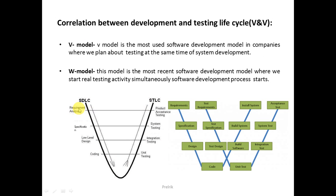In the V model, when working on one phase, they simultaneously plan for the corresponding test. At Requirement Analysis they plan for UAT, at Specification they plan for System Testing, at Low-Level Design they plan for Integration Testing, and at Coding they perform Unit Testing. Once coding is done, unit testing is performed, then pieces are integrated and Integration Testing is carried out.